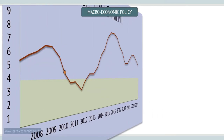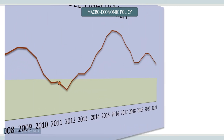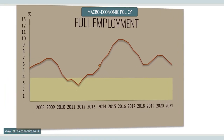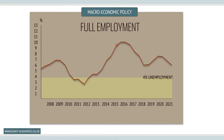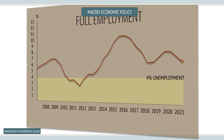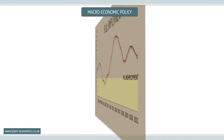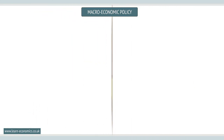Achieving full employment, typically around 4% unemployment. This means that some level of unemployment is accepted as inevitable, given that people will be changing jobs and some will be unemployed as a result of business failures.